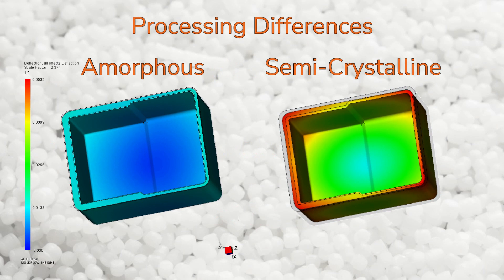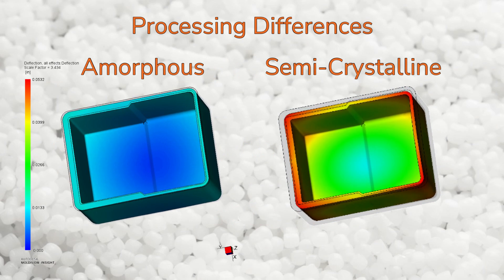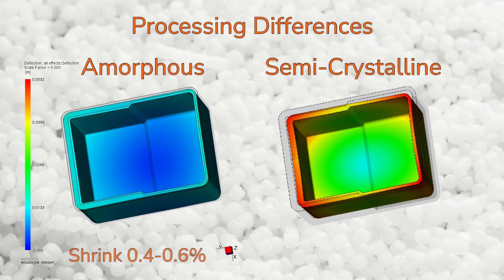Pack pressure is applied after filling the mold to compensate for mold shrinkage. Amorphous resins normally shrink by 0.4 to 0.6 percent, whereas semi-crystalline resins normally shrink by 1.2 to 2 percent. For this reason, if a mold is used to make parts with an amorphous resin and then a semi-crystalline resin, there could be significant differences in the part sizes between the two materials.